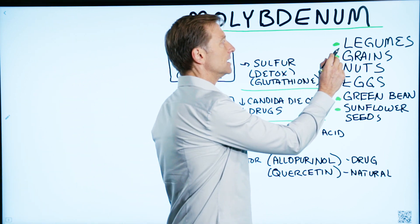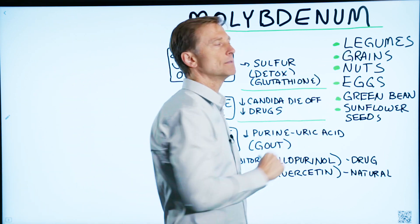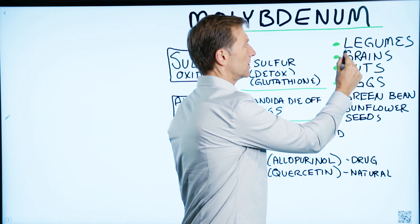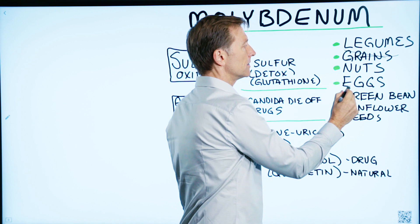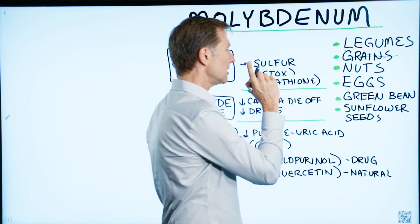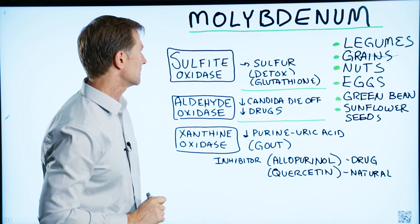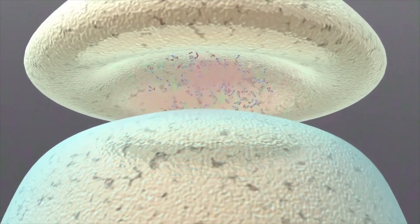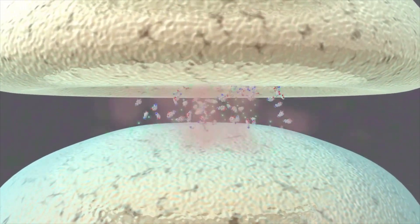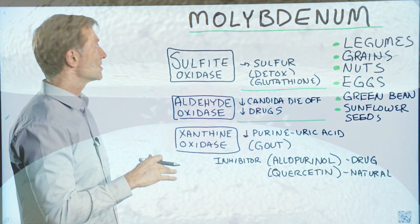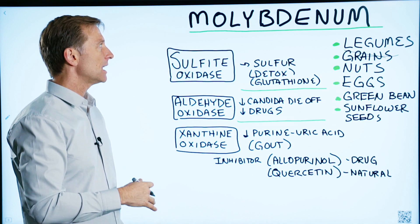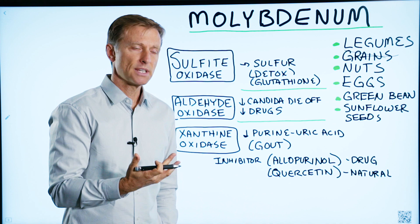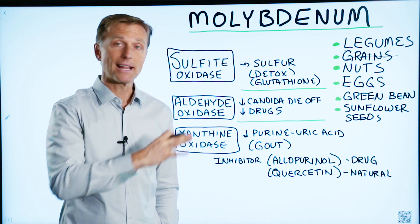It's present in legumes, peanuts, grains (which you're not supposed to consume), nuts, eggs, green beans, and sunflower seeds. But it's a coenzyme for many chemical reactions in your body. That's what trace minerals do mainly — they're involved in a lot of different cofactors or co-helpers in biological pathways.